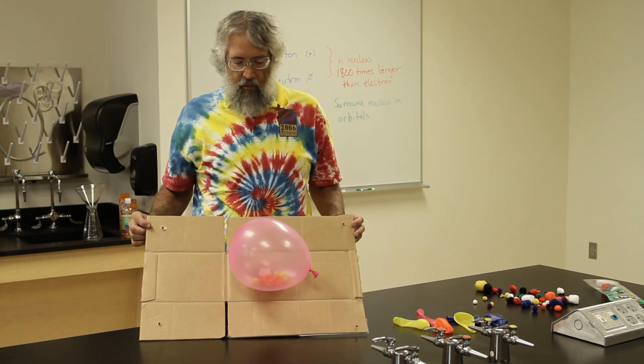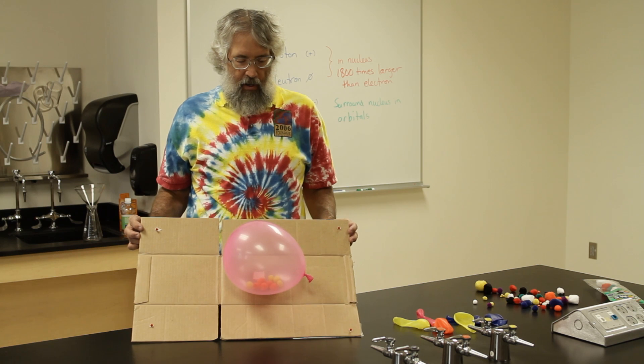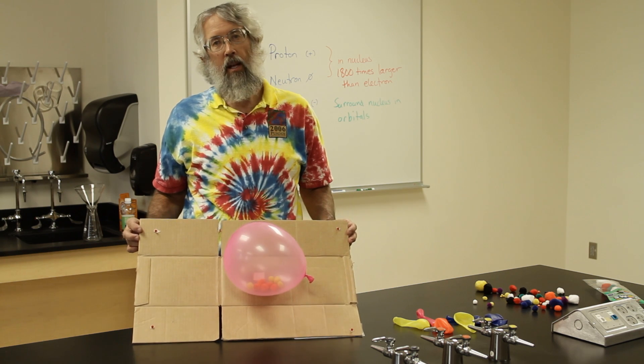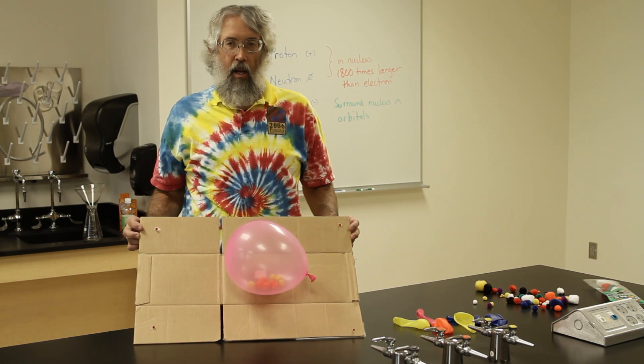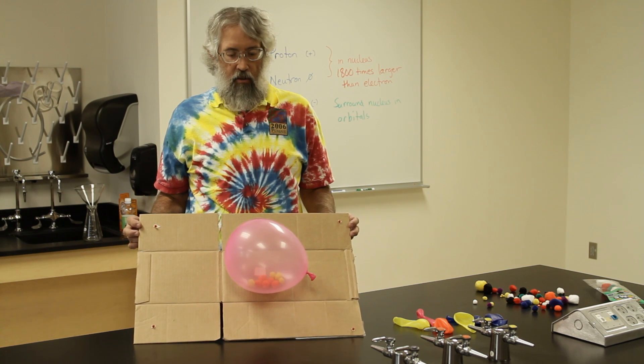So here, then, we have the model, a simple model of a beryllium atom. The nucleus consisting of four protons and five neutrons, and four electrons to balance the electrical neutrality.